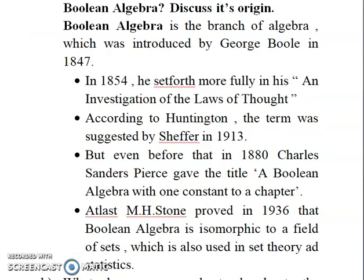But even before that, in 1880, Charles Sanders Peirce gave the title 'A Boolean Algebra with One Constant' to a chapter. And lastly, M. H. Stone proved in 1936 that Boolean algebra is isomorphic to a field of sets, which is also used in theory and statistics.